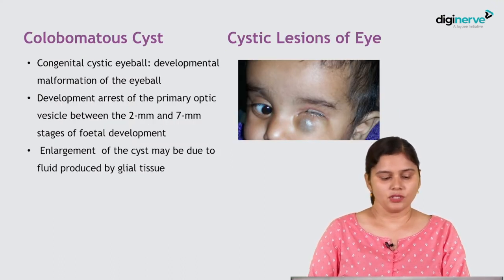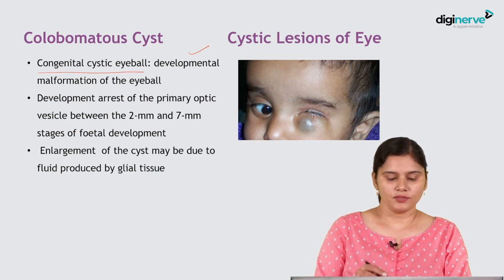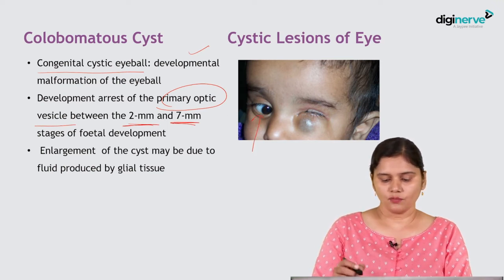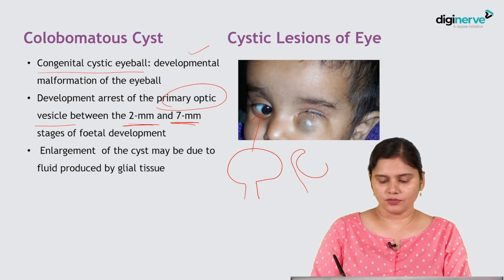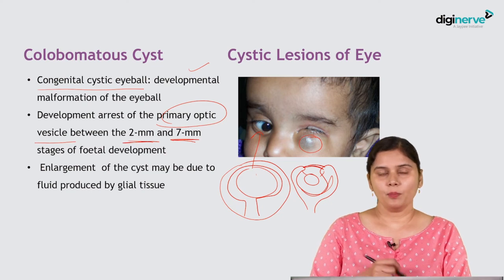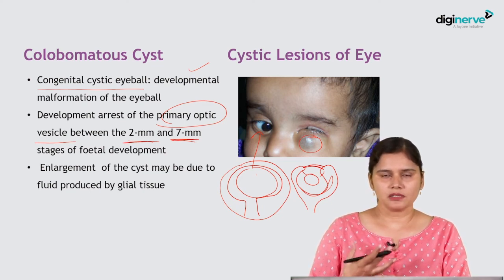A colobomatous cyst of the eye, or congenital cystic eyeball, is a developmental malformation where there is developmental arrest of the primary optic vesicle between the 2 mm to 7 mm stage of fetal development. The eye does not form properly — the optic vesicle fails to invaginate upon itself, and instead forms a double-layered vesicle, resulting in a congenital cystic eye. When the eyelids are opened, only abnormal cystic tissue is present, wherein tumors can develop at a later age.